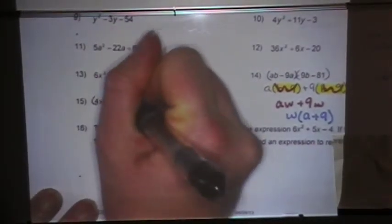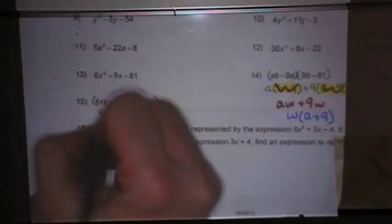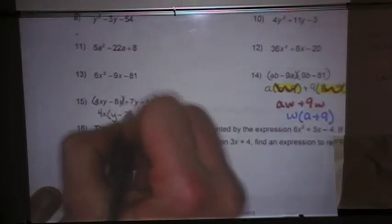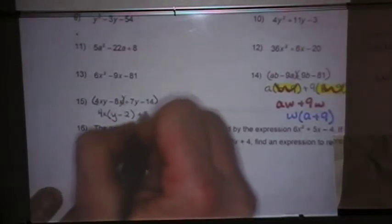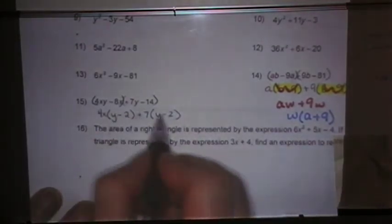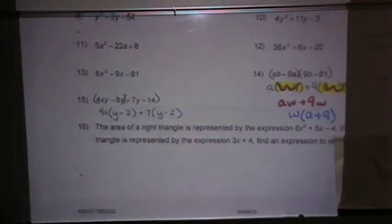I'm going to go ahead and group this and group this. Factor out a 4x. That would leave me y minus 2. Factor out a plus 7, and that leaves me y minus 2. These two things match, which means they are w.